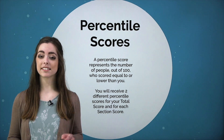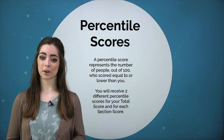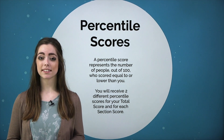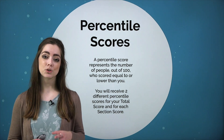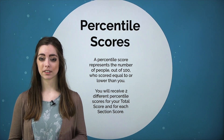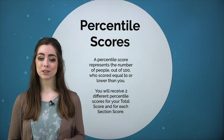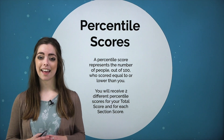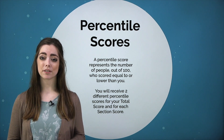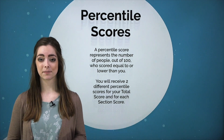You will also receive six different percentile scores on your score report. A percentile score represents the number of people out of 100 who scored equal to or lower than you. So if your score report says that you scored in the 57th percentile, that means you scored equal to or better than 57 out of every 100 people who took the test.